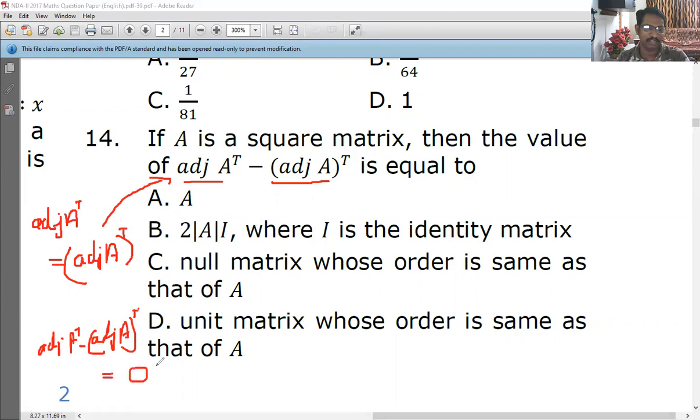So the answer you got is 0. What is the option? It is the null matrix whose order is same as that of A.